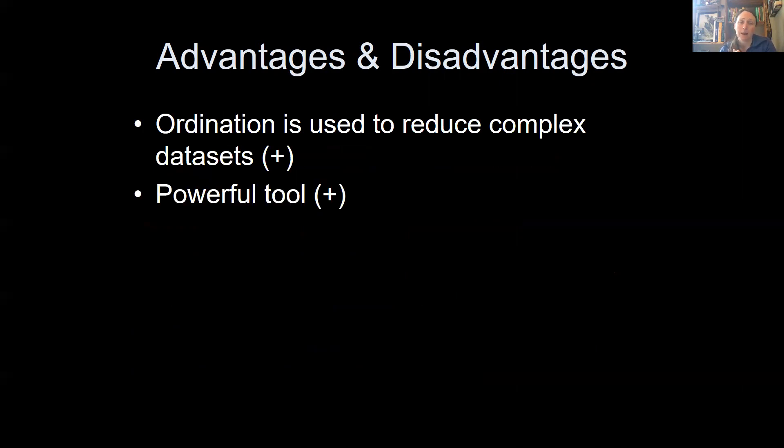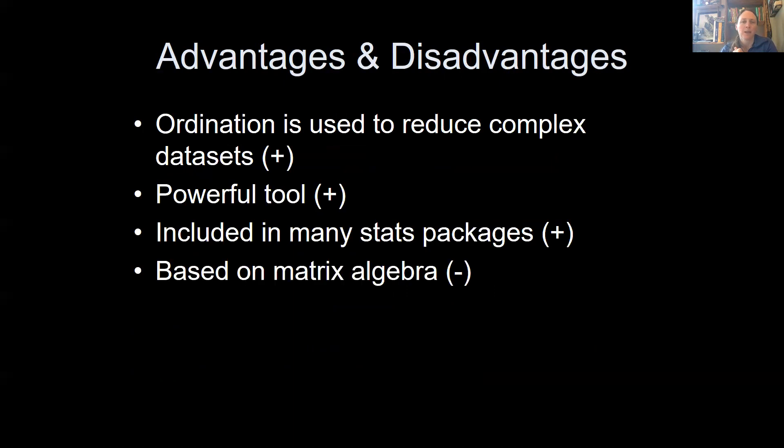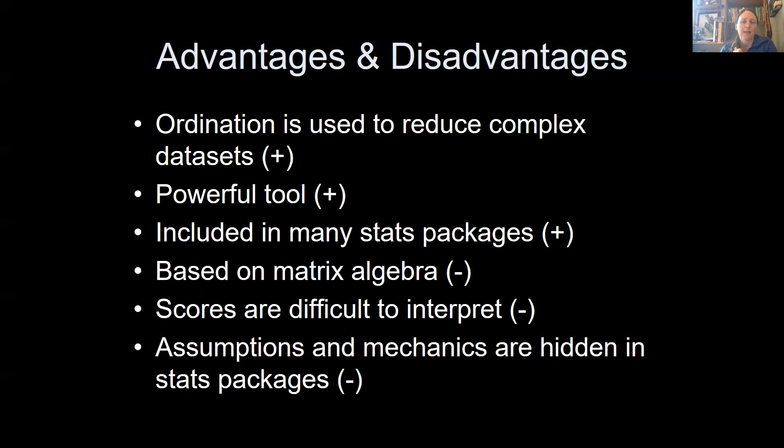So some of the advantages and disadvantages of ordination is that it's useful. It can reduce complex data sets. It's very powerful. It's included in some stats packages. JUMP does PCA ordination, but not NMS. Some of the disadvantages is that it's mathematically complicated. It's based on matrix algebra. The scores are sometimes difficult to interpret, and some of the assumptions and mechanics are hidden inside the stats packages.